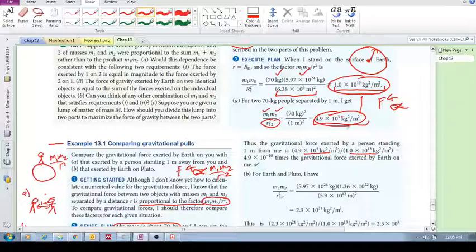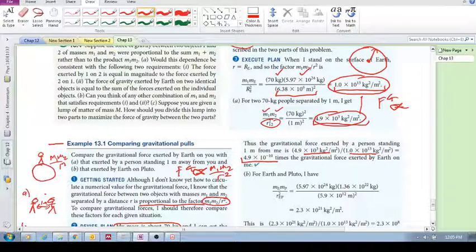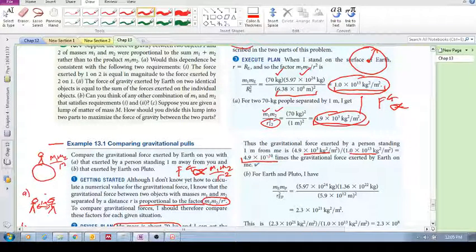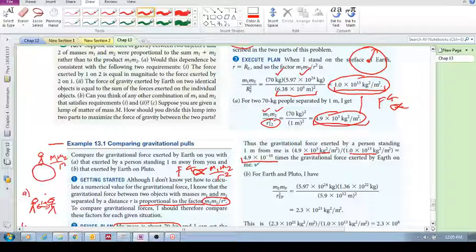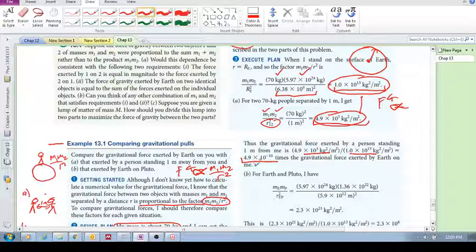4.9, this is the... and we find these ratios. And we can say that the gravitational force exerted between two people is 4.9 times 10 to the minus 10 times smaller than that between a person and the earth. It's more than a billion times smaller than the gravitational force of earth exerted on you.